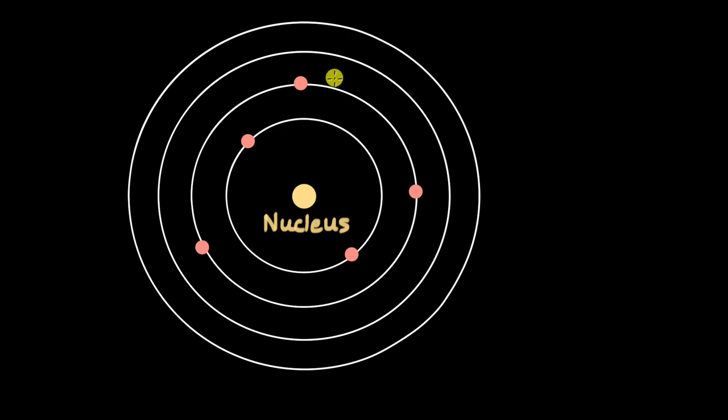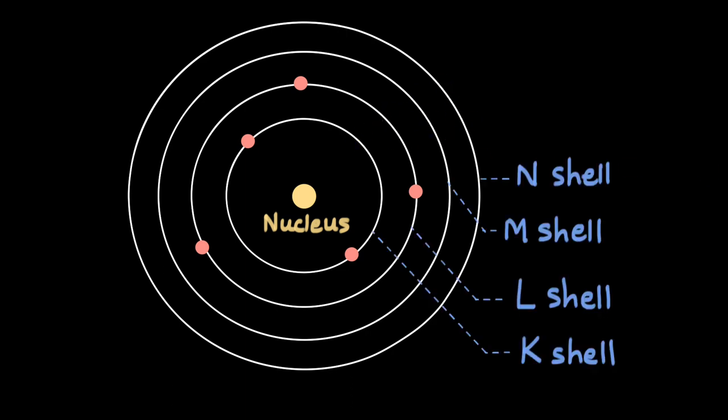Electrons cannot exist in between energy levels or special orbits. These energy levels have a name of their own. The first one is called the K-shell, the one closest to the nucleus. The one next to it is called the L-shell. Then you have the M-shell and N-shell and so on.